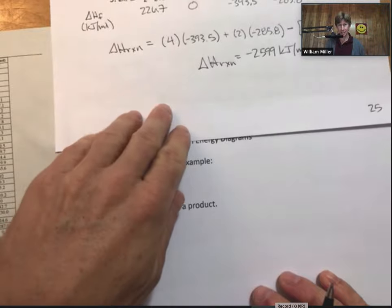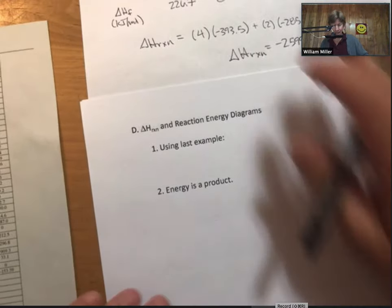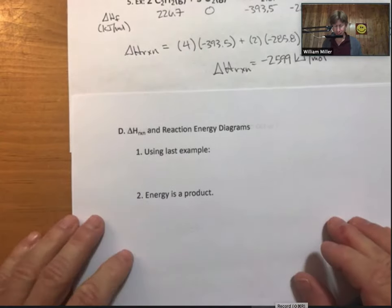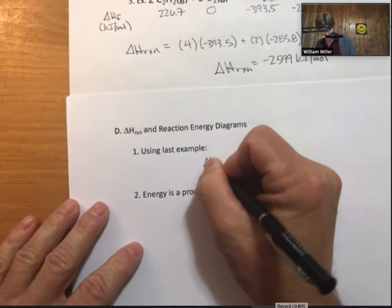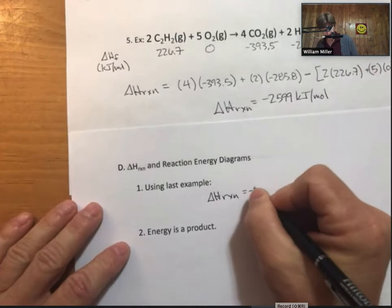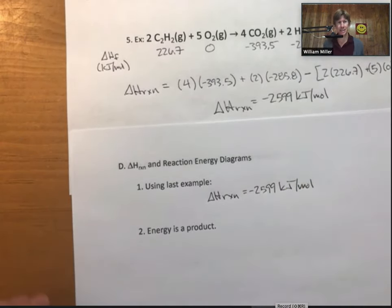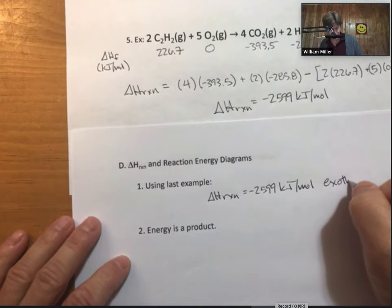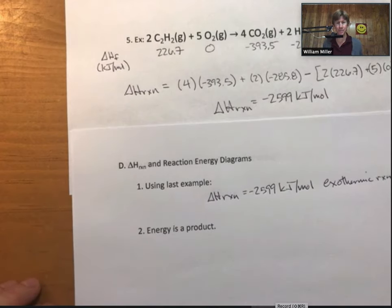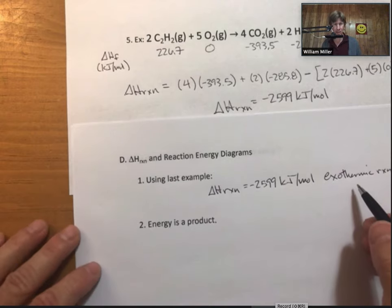Now, let's see if I can leave that up there. There we go. Now we're going to do what's called a reaction energy diagram. A reaction energy diagram. Using the last example. Delta H reaction equals minus 2599 kilojoules per mole. This is a highly exothermic reaction. That means energy is given off. Energy is a product. That's also for an exothermic reaction, another way of looking at it.